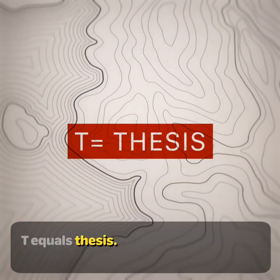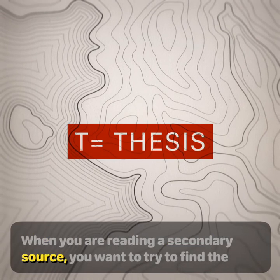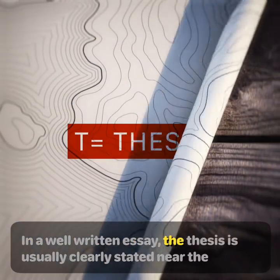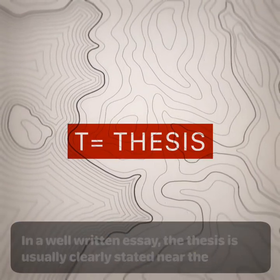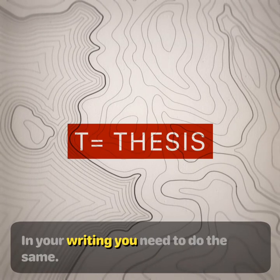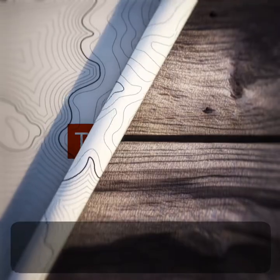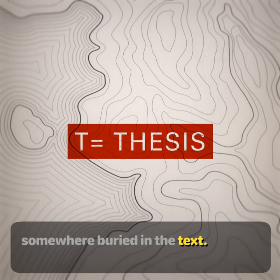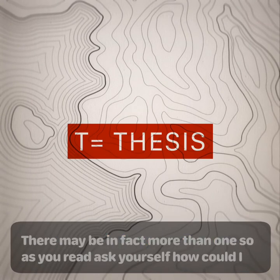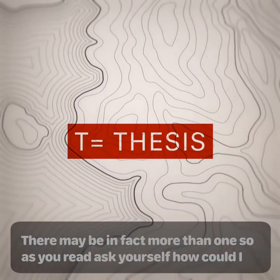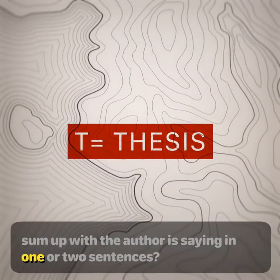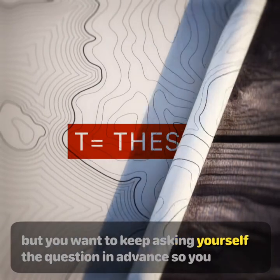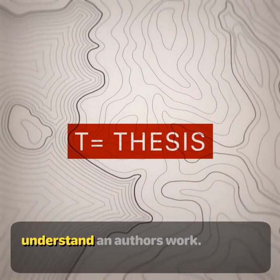T equals thesis. When you are reading a secondary source, you want to try to find the author's thesis. In a well-written essay, the thesis is usually clearly stated near the beginning of the piece, and in your writing you'll need to do the same. In a long article or a book, the thesis is usually somewhere buried in the text, and there may in fact be more than one. So as you read, ask yourself: how could I sum up what the author is saying in one or two sentences? It might be a difficult task, but you want to keep asking yourself that question so you'll understand an author's work.